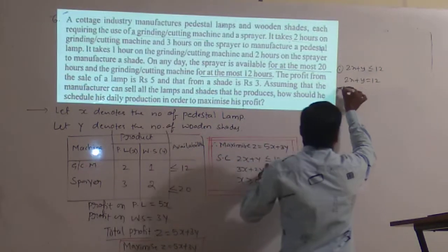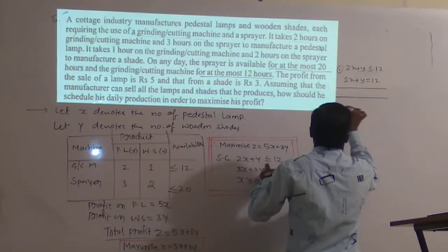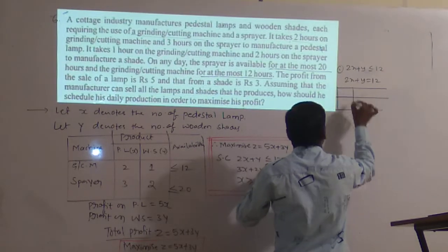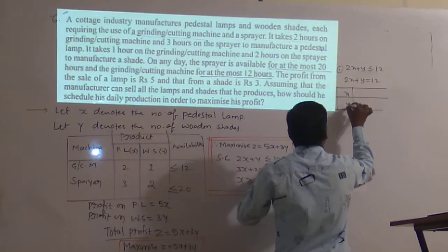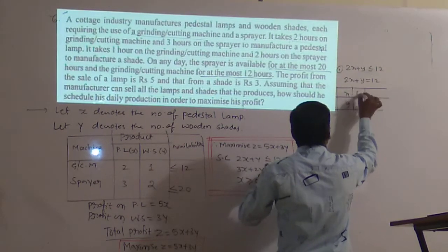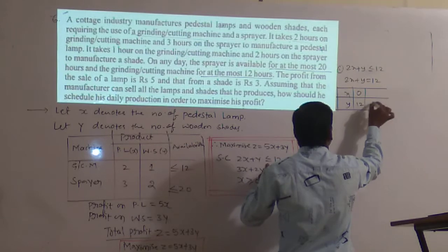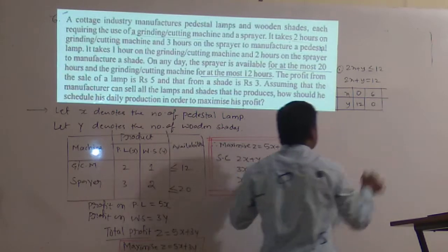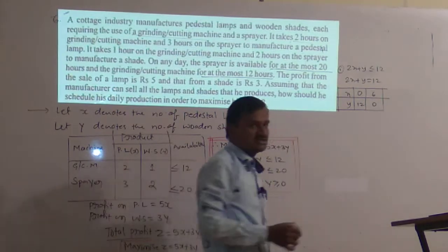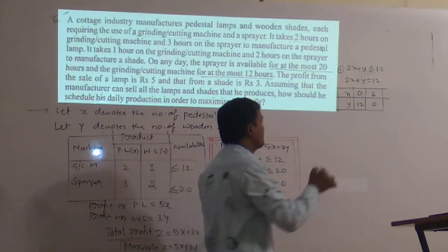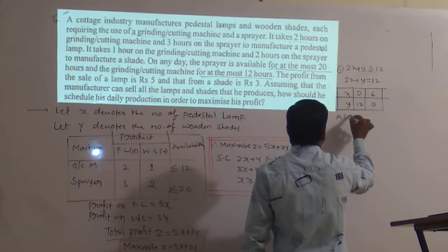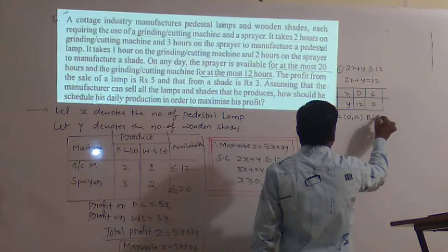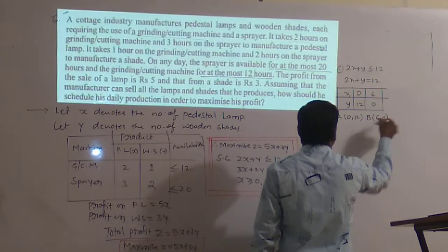This equation represents a straight line. Put x = 0, the value of y = 12. Put y = 0, the value of x = 6. So the first point is (0, 12) and the second point is (6, 0). Now we go for verification.